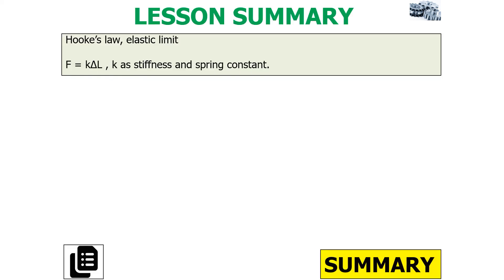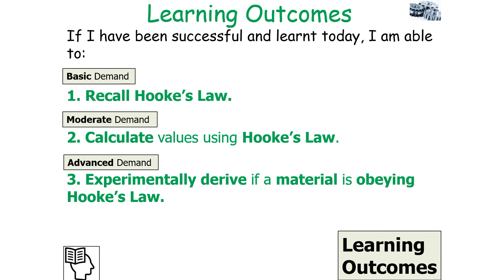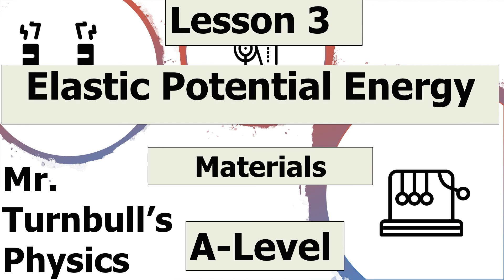From today's lesson we should be able to understand Hooke's Law, the elastic limit, F = KΔL where K is the stiffness or spring constant, and how to calculate elastic potential energy. We should be able to recall Hooke's Law, calculate values using Hooke's Law, and experimentally derive if a material is obeying Hooke's Law. I hope you've enjoyed today's lesson on elastic potential energy from the materials topic of AQA A-level physics — thank you for watching and have a lovely day.